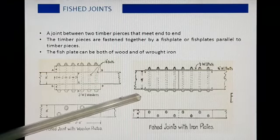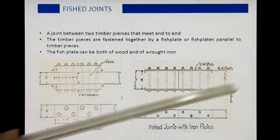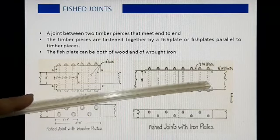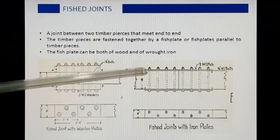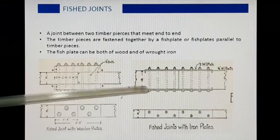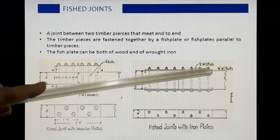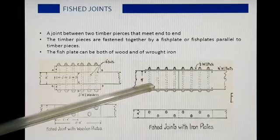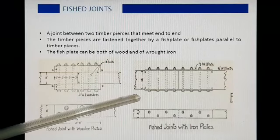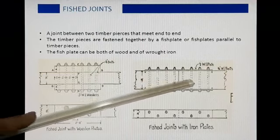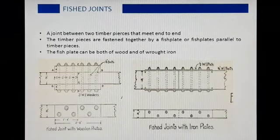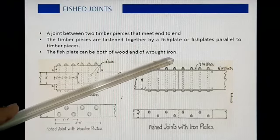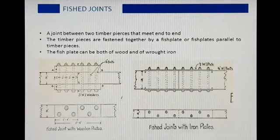दूसरे figure में iron fish plate काम में लिया गया है. इस case में bolts तो लगाए हैं, पर fish plate को घुमाकर उसके अंदर एक flap सा बनाकर उसको wood के अंदर भी insert कर देते हैं. इस insertion की वजह से fish plate, pieces से बहुत अच्छे से secure हो जाती है और दोनों pieces को आपस में हिलने नहीं देती है. इस प्रकार से fish joint, wooden और iron fish plates की मदद से बनाया जा सकता है.